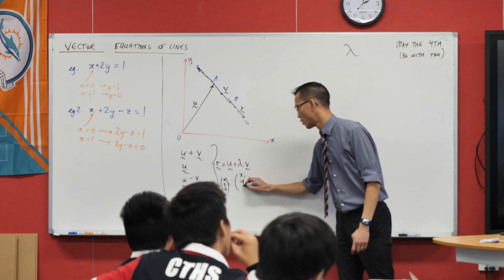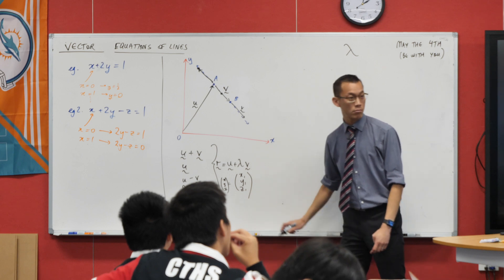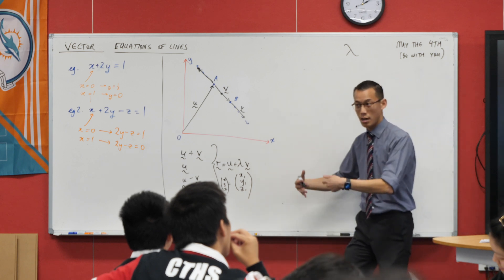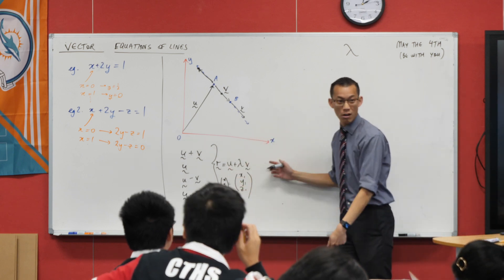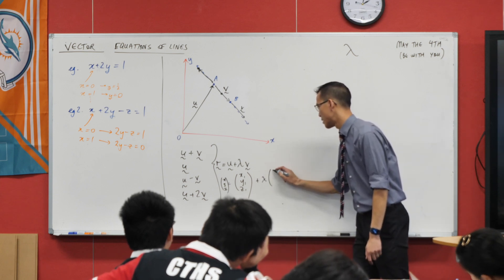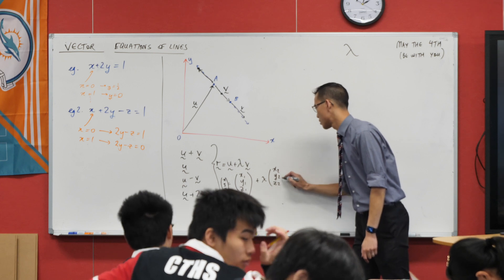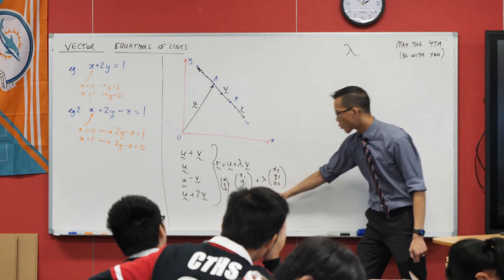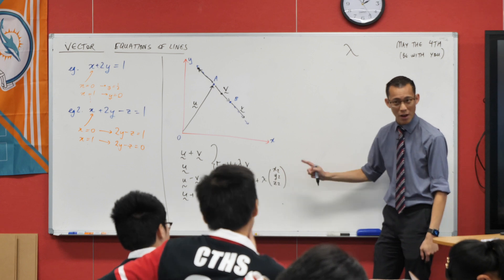So I guess maybe I call this x₁, y₁, z₁, plus some real multiple of another vector, lambda, and then I've got x₂, y₂, z₂.